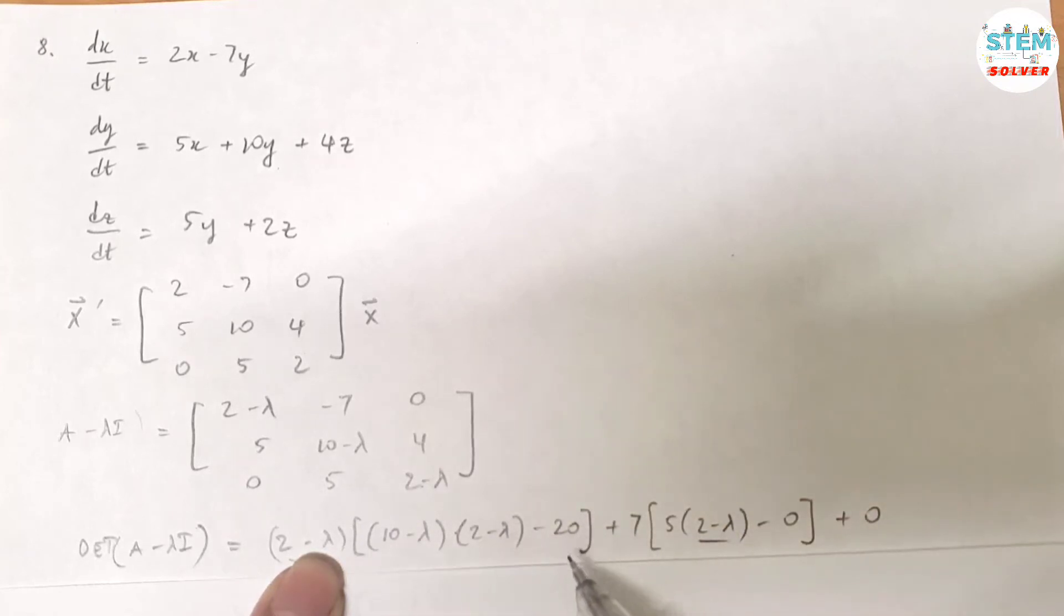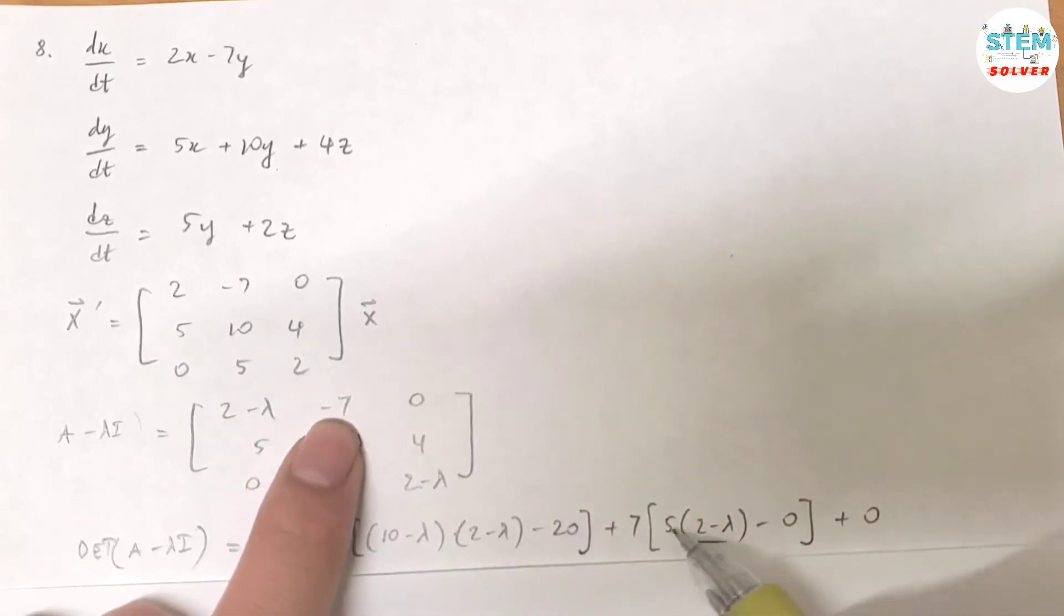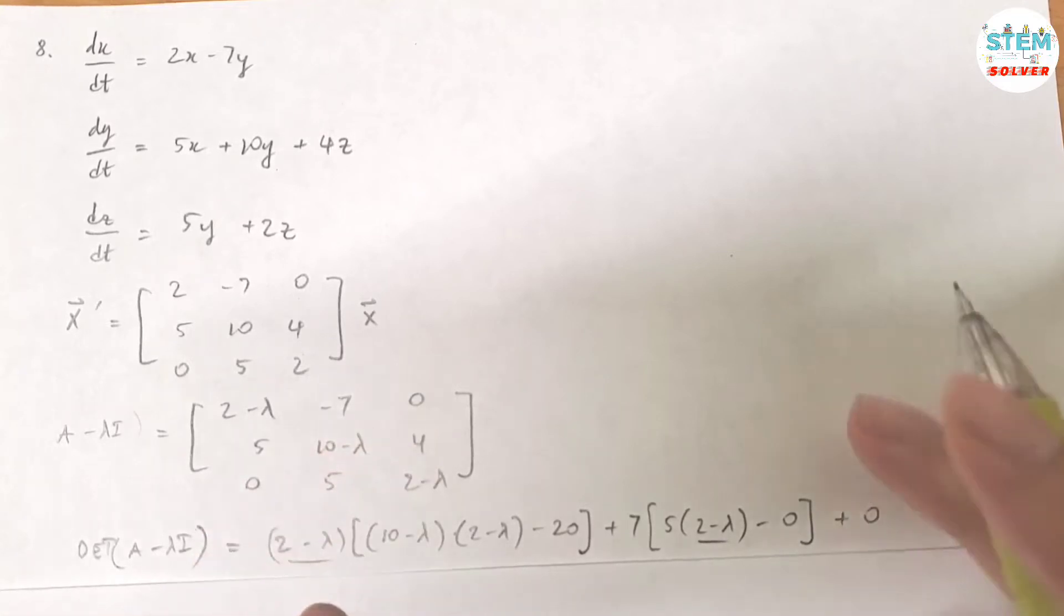Which is negative 20, minus negative 7 times, call this column and this row, 5 times 2 minus lambda minus 4 times 0, which is 0, and then plus 0. Okay, simplify this.